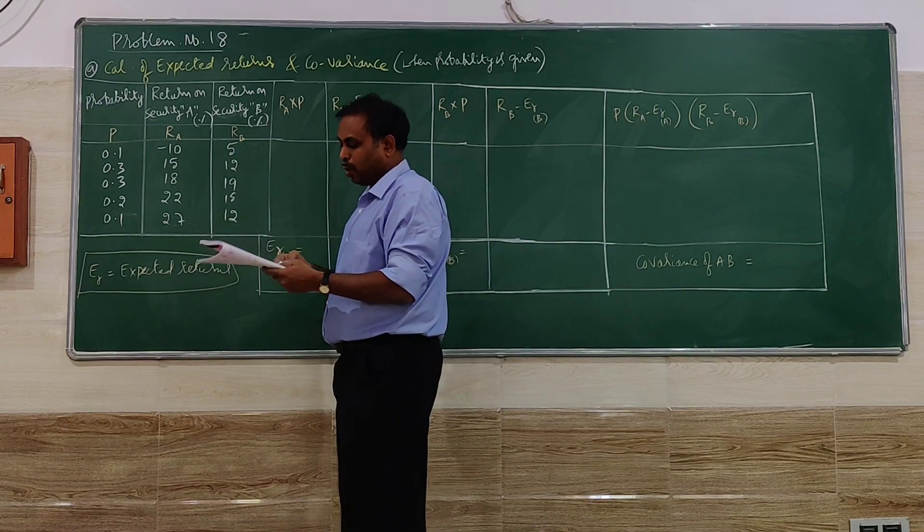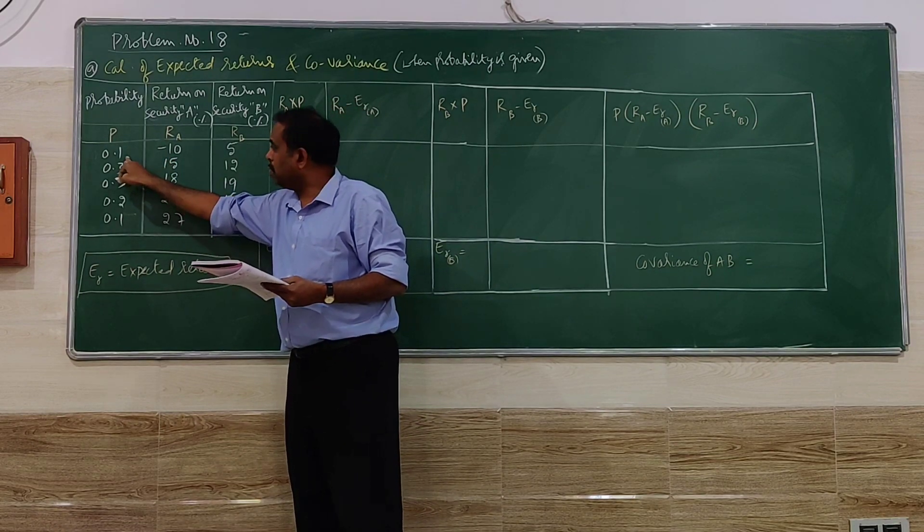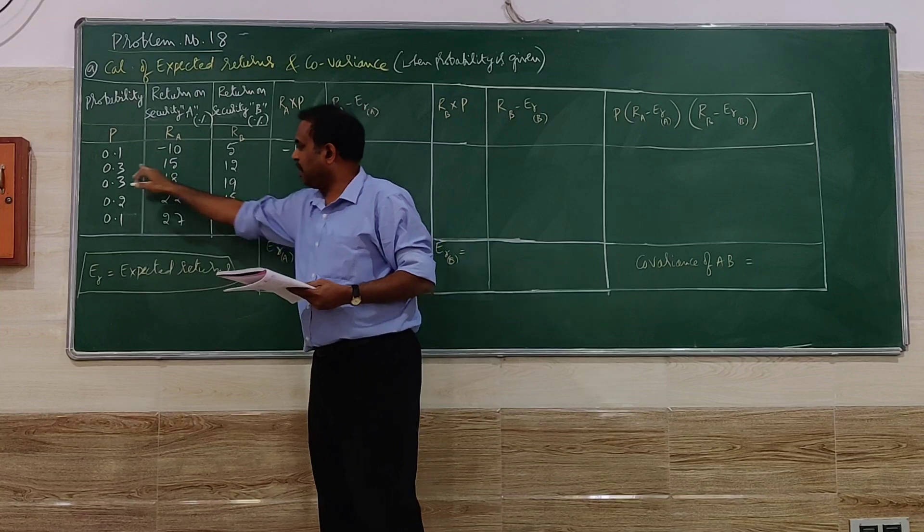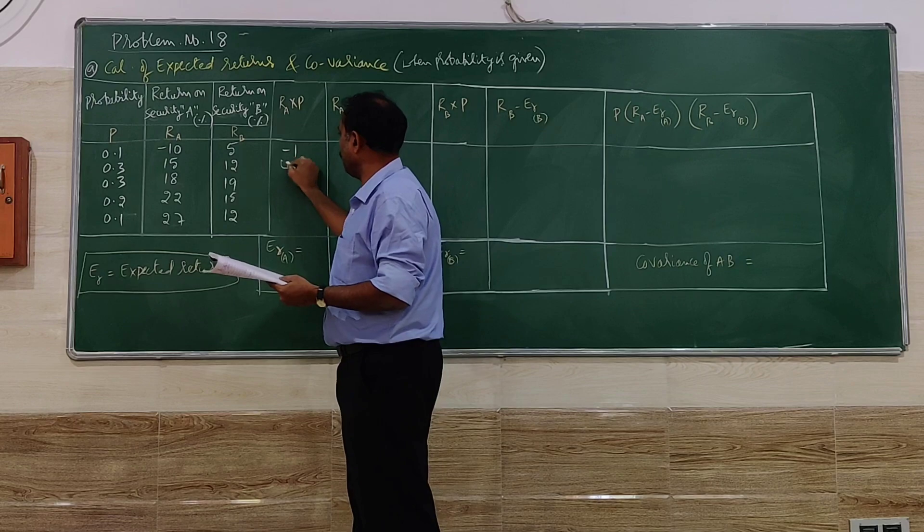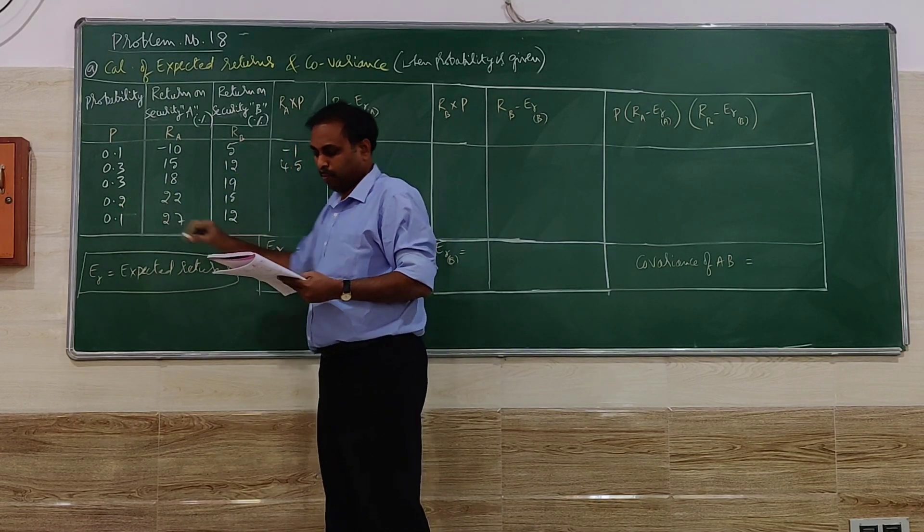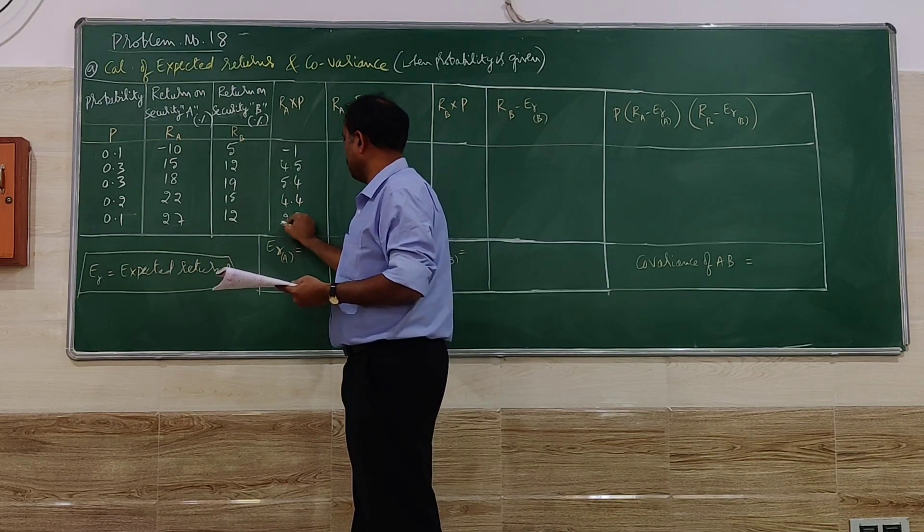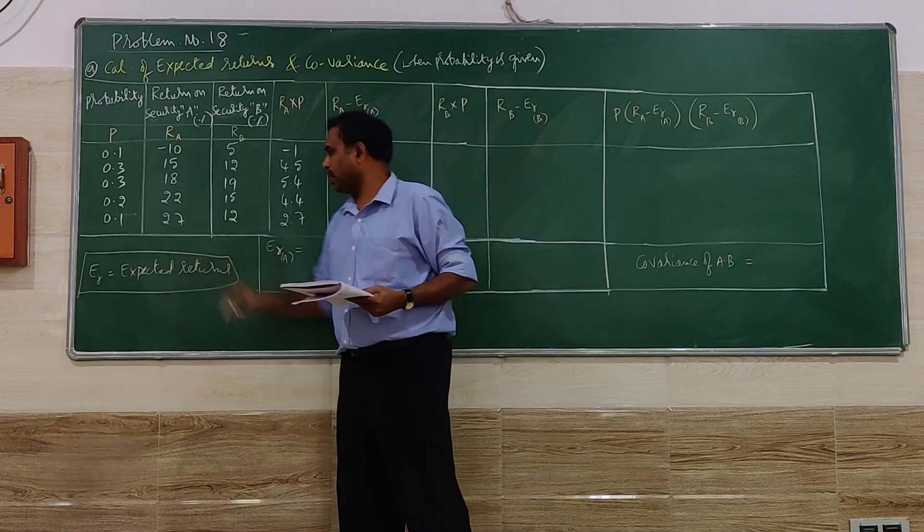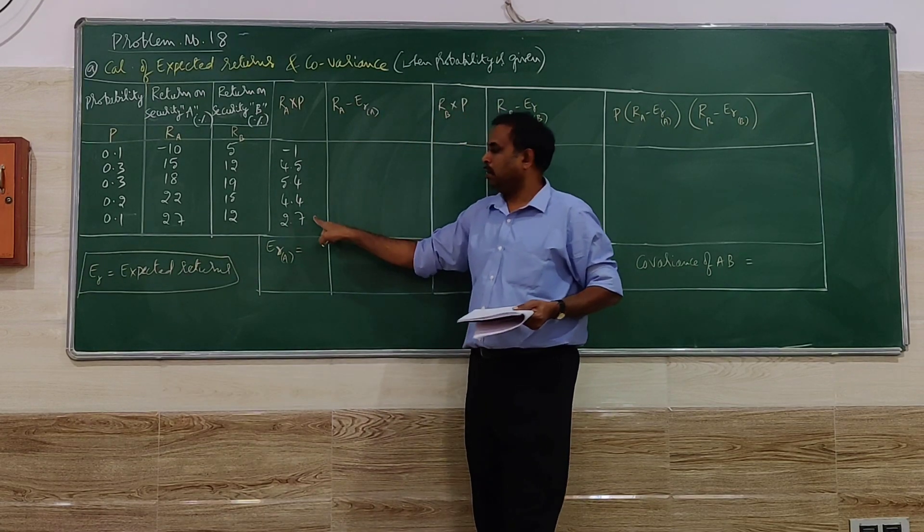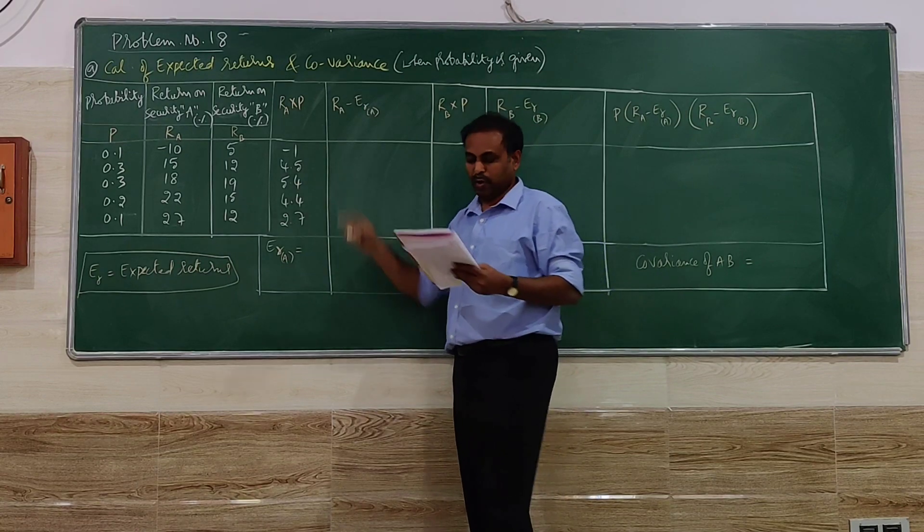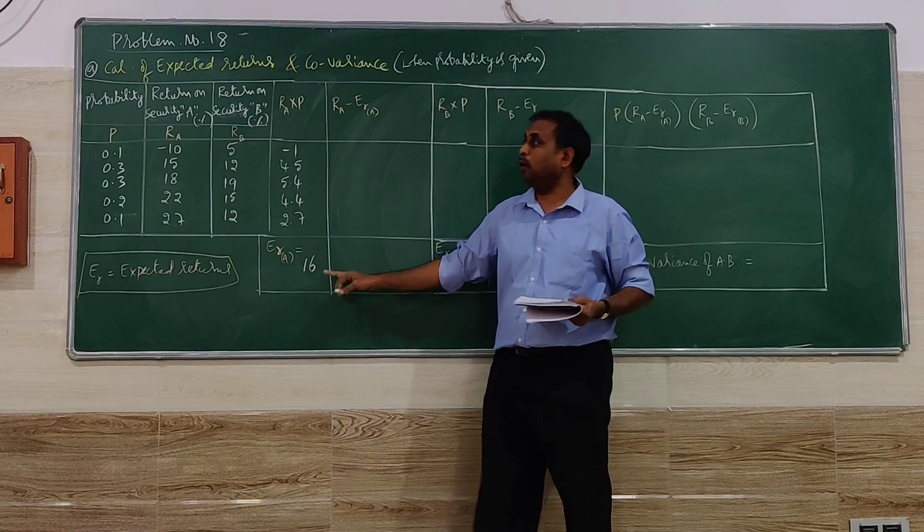So if we calculate like that, we are going to get the values. Carefully look at it: minus 10 into 0.1 is minus 1, 15 into 0.3 is going to be 4.5, 18 into 0.3 is 5.4, similarly 4.4, and 2.7, that is 27 into 0.1. If you add this, you are going to get expected return. So all plus you have to add, minus 1 you have to do, you will get 16 for expected return of security A is 16.